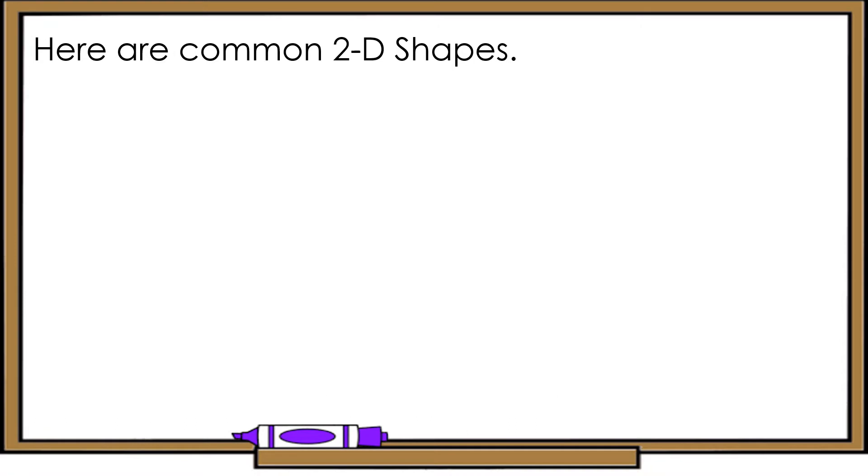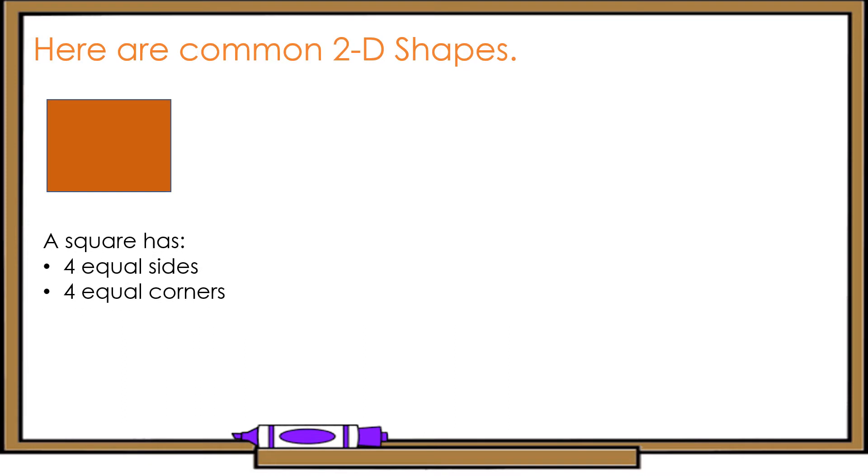A square has 4 equal sides. So, these are the sides. Side 1, side 2, side 3, and side 4. And it has 4 equal corners. So, these are the corners.